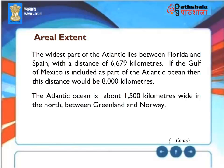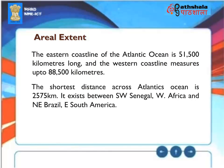The Atlantic Ocean is about 1,500 kilometers wide in the north between Greenland and Norway. The eastern coastline is 51,500 kilometers long, and the western coastline measures up to 88,500 kilometers. The shortest distance across the Atlantic is 2,575 kilometers, between southwest Senegal in West Africa and northeast Brazil in South America.